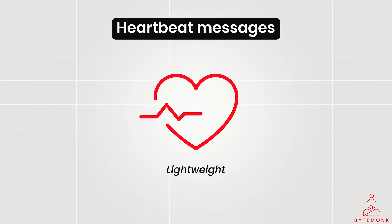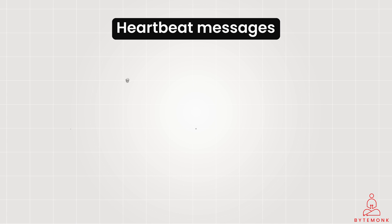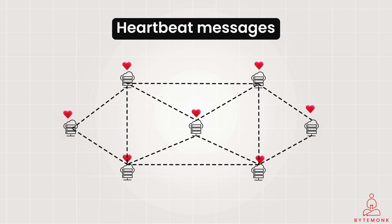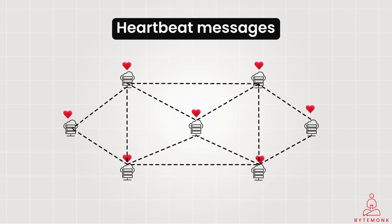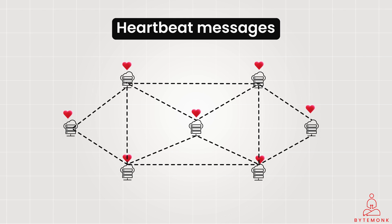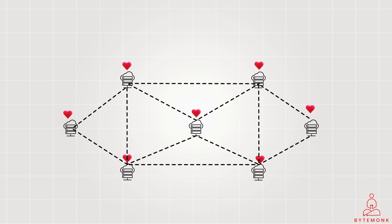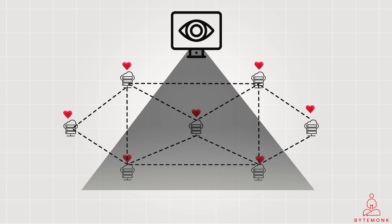Heartbeat messages are typically lightweight, low-overhead signals or packets that convey a node's status or presence. The content can vary based on system-specific requirements — these messages can be as simple as periodic 'I'm alive' signals, or can contain additional information about the sender's status, load, or capabilities. In systems that prioritize high availability, multiple nodes often send and receive heartbeat messages, using redundancy to ensure that if one node fails, others can take over. Failover mechanisms such as promoting a standby node to an active state may be triggered upon detecting a failure. Monitoring tools can use heartbeat data to assess health, generating alerts when failures are detected to enable proactive intervention.